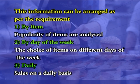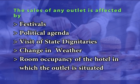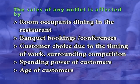This information is obtained from the analysis of daily sales summary of the restaurant, and can be arranged by item, popularity of items, by day of the week, and on a daily basis. The sales of any outlet is affected by festivals, political agenda, visit of state dignitaries, localities, change in weather, room occupancy of the hotel in which the outlet is situated, room occupants dining in the restaurant, banquet bookings or conferences, customer choice due to timing of work, surrounding competition, spending power of customers, and age of customers.